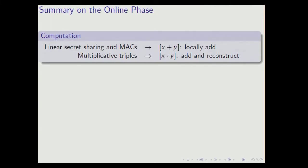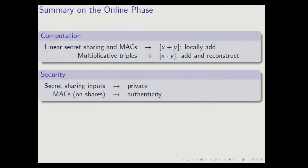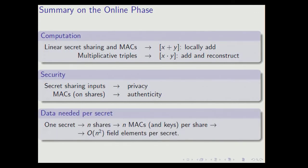So the philosophy of the protocol: linear secret sharing schemes and MACs allow you to compute additions, and multiplicative triples also allow you to compute products. For the security part, the secret sharing gives you privacy and the MACs give you authenticity. The complexity of this online phase is the following: for every secret you have n shares, and for every share you have n MACs and keys. So you need a quadratic amount of field elements per secret. Can we do it better?